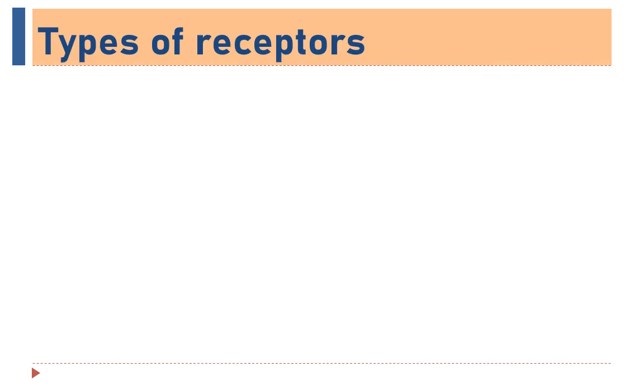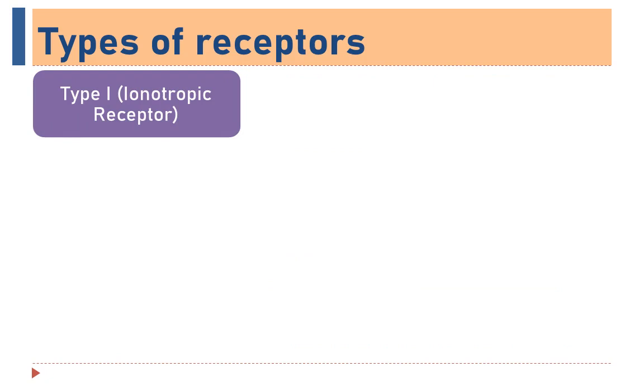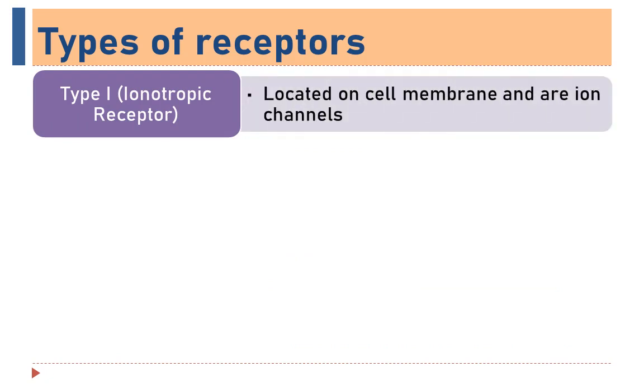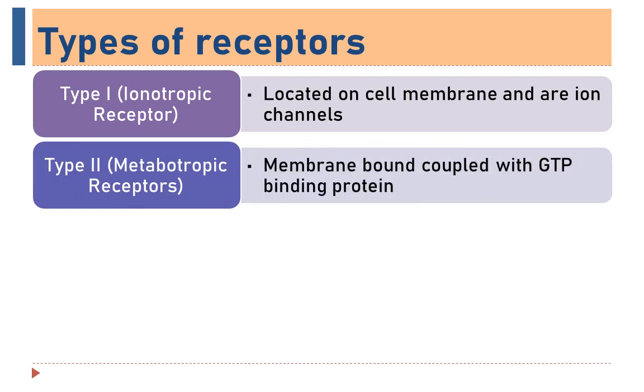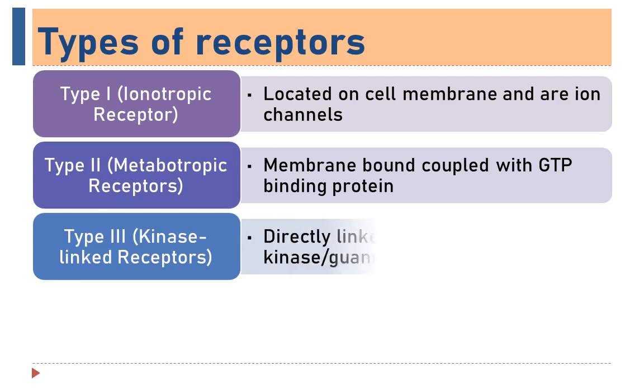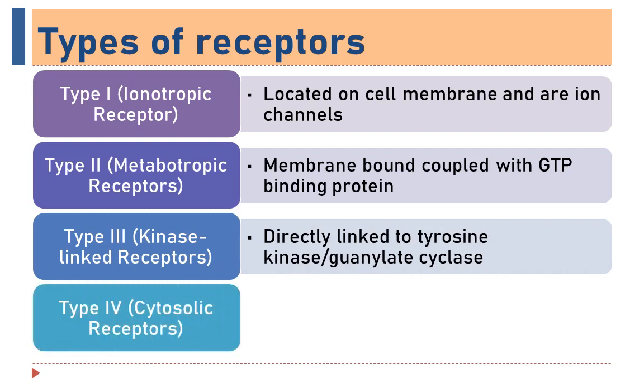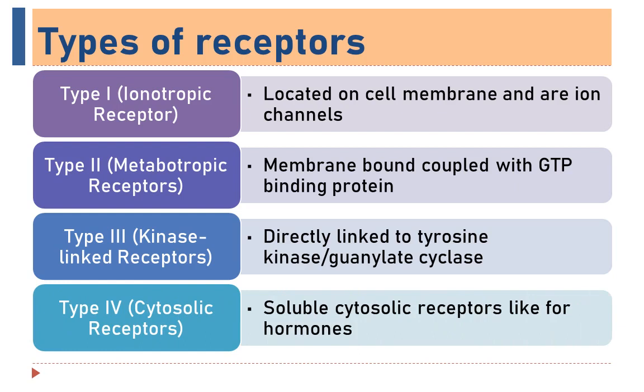There are four different types of receptors. Type 1, ionotropic receptors, are located on cell membrane and are ion channels, specifically ligand-gated ion channels. Type 2, metabotropic receptors, are also membrane bound coupled with GTP binding proteins. Type 3, kinase linked receptors, are directly linked to tyrosine kinase or guanylate cyclase. And Type 4, cytosolic receptors, act on soluble cytosolic receptors like for various hormones.